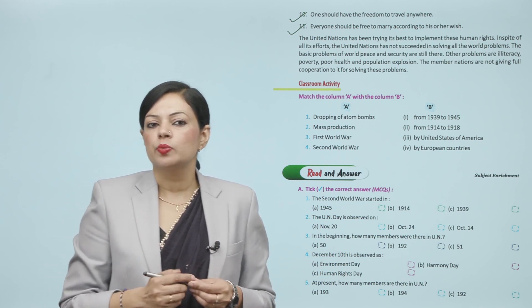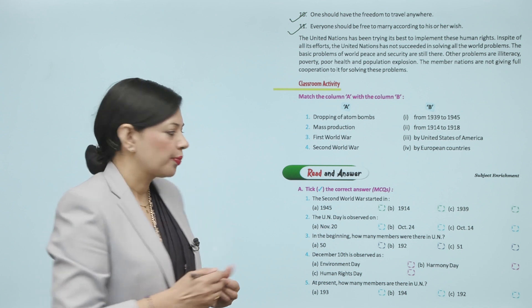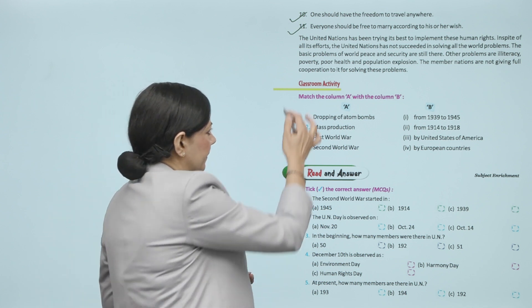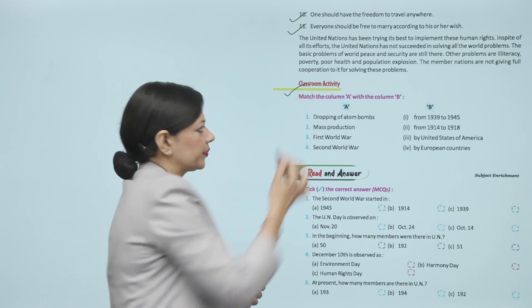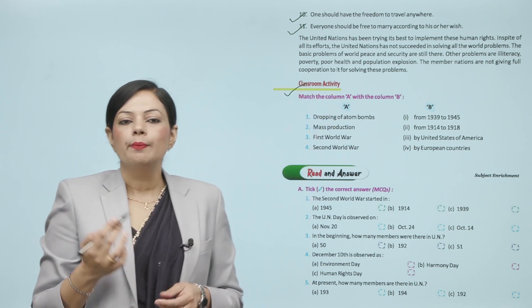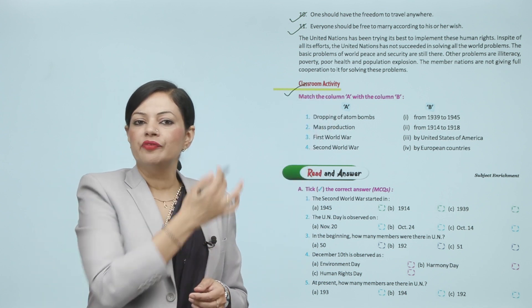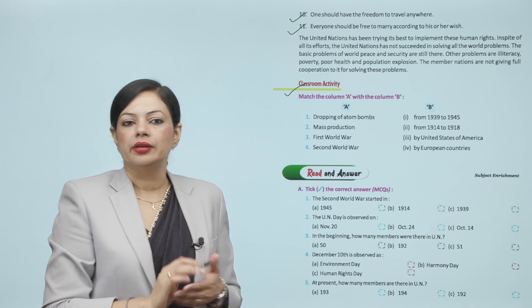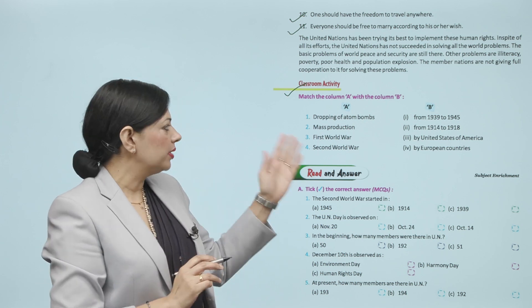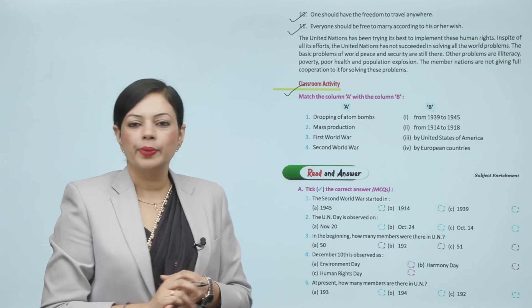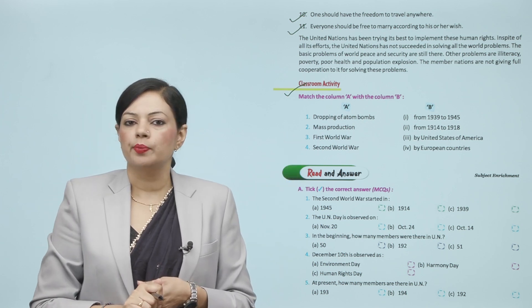Now here is the classroom activity. Match column A with column B. For example, the first is: dropping of atom bombs.